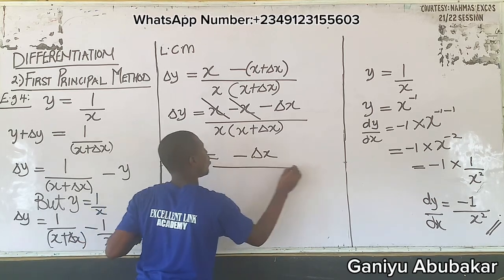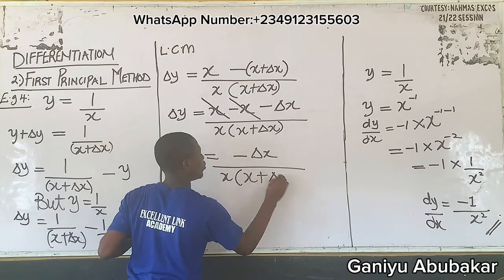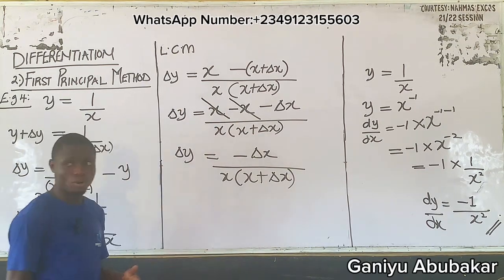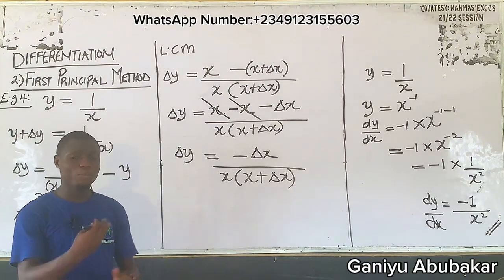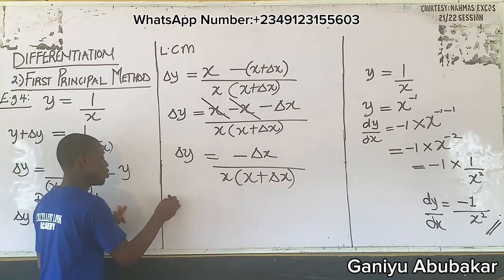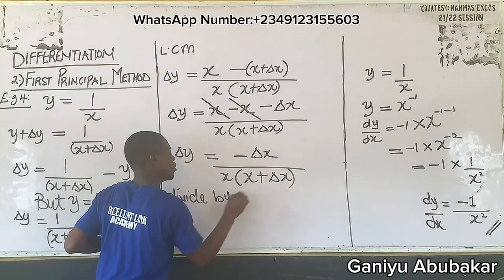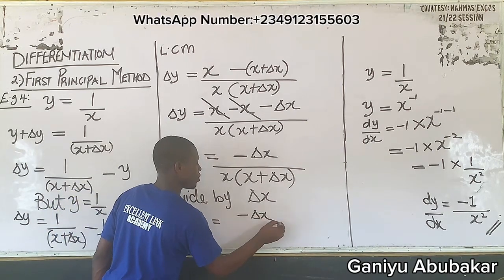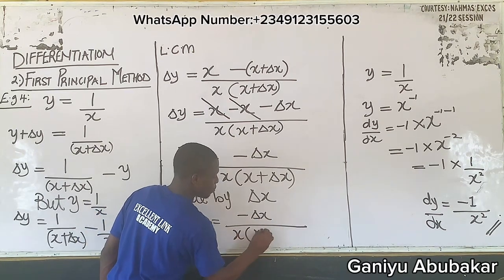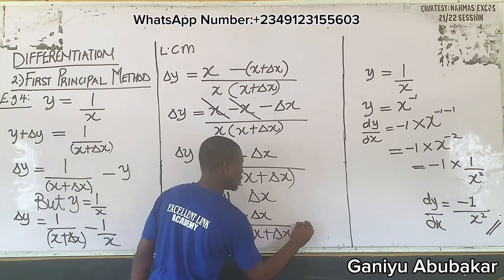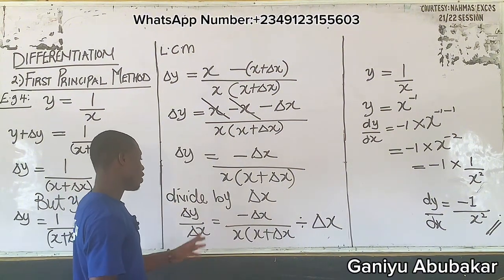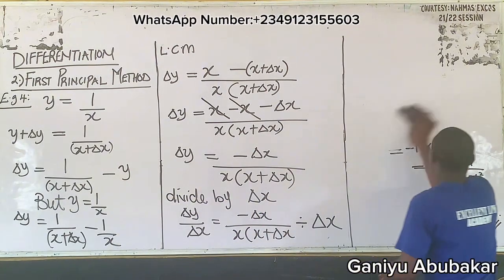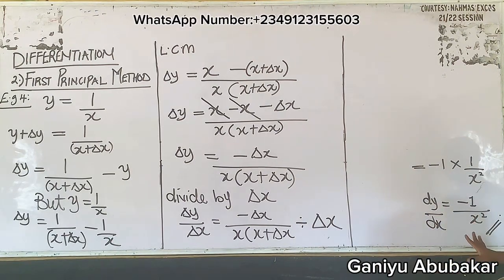From here, change in y equals minus change in x all over x into (x plus change in x). Checking previous examples, after canceling out, the next step is to divide through by change in x. So dividing both sides by change in x gives change in y over change in x equals minus change in x all over x into (x plus change in x), divided by change in x.